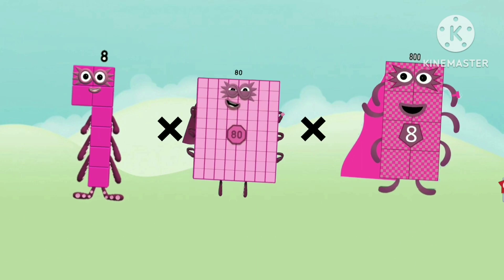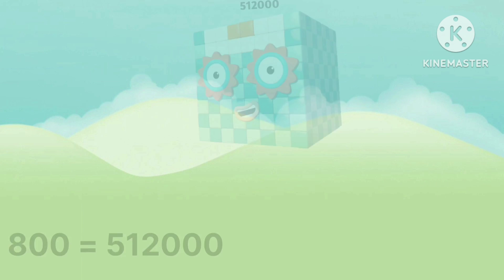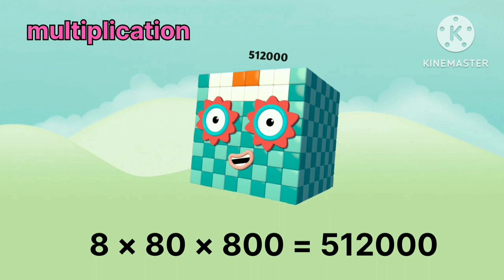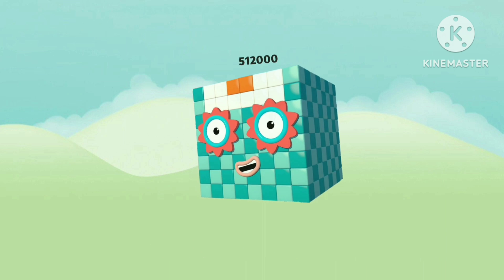8. Multiply by 80. Multiply by 800. Equals 5 lakhs 12000.